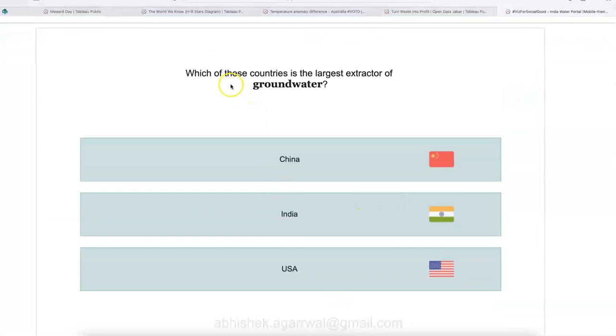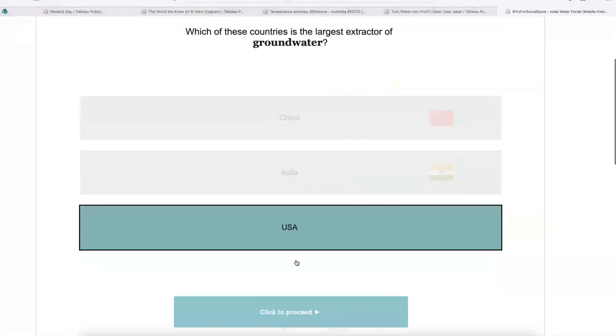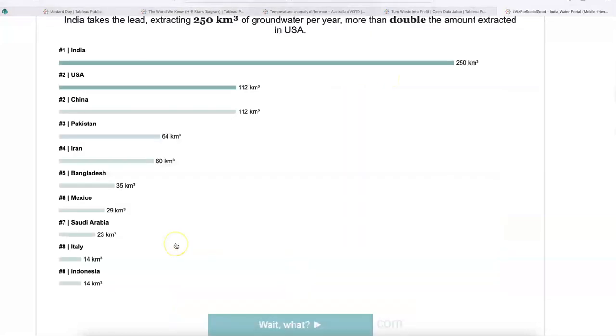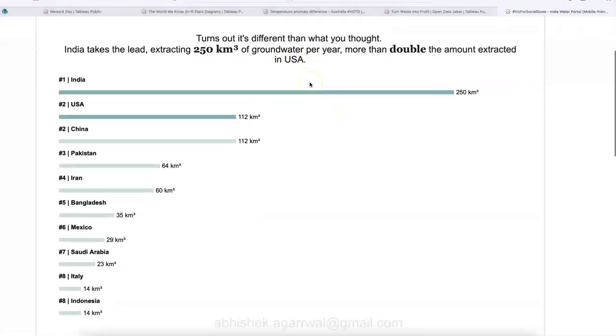So yes, the situation is going concerning and this is how shallow tube wells and medium tube wells trend and the trend for the deep tube wells is increasing. Now the next question, which of these countries is the largest extractor of groundwater? Let me select USA, and see what is happening. So turns out it's different than what you thought.